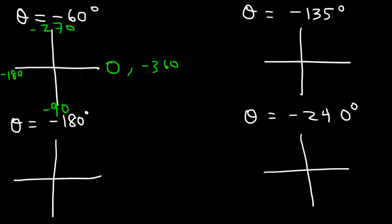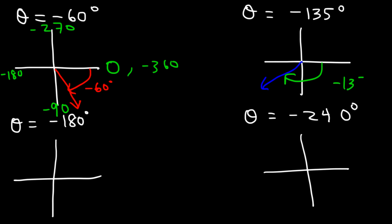To plot negative 60, we rotate close to negative 90 but not too far — that's an angle of negative 60 degrees. Negative 135 is between negative 180 and negative 90, right in the middle in quadrant 3 — that's negative 135. Negative 180 lands right on the negative x-axis, so it's simply over here, relative to the positive x-axis — this is negative 180.